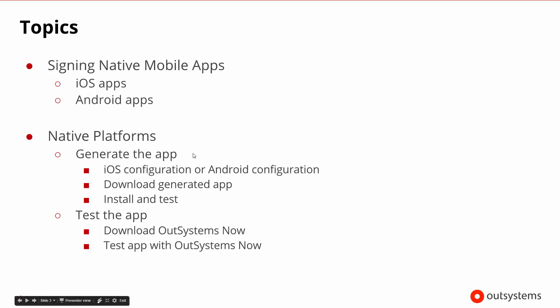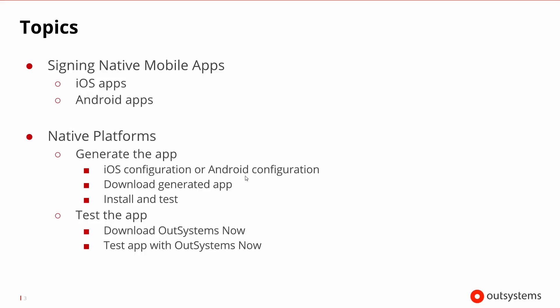To be able to generate the app, we have to create a configuration. That configuration has some of the signing information that we'll talk about. There's a different configuration for iOS and a different configuration for Android. Once we provide the configuration information, we can generate the app, then download, install, and test the app on the device itself, because we would create the application package and be able to access it.